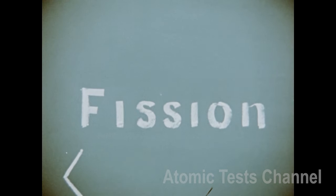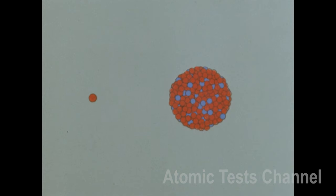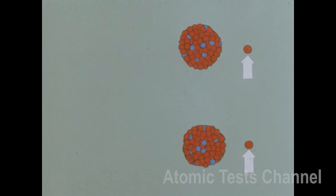Fission results when the nucleus of a heavy, unstable atom is struck by a neutron, a subatomic particle. The target atom splits into two smaller atoms with a release of nuclear energy and some other neutrons.